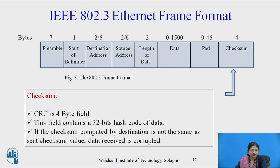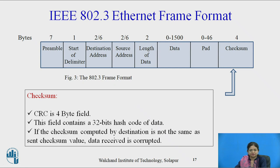If the checksum computed by the destination does not match the checksum of the received data, then the received data is considered corrupted and is discarded by the destination. This completes the frame format and each and every field present in the frame as provided by IEEE 802.3.